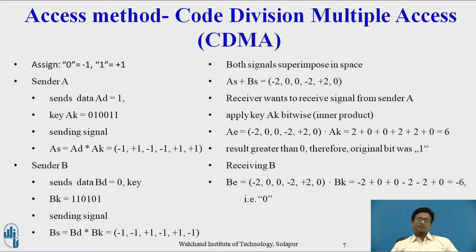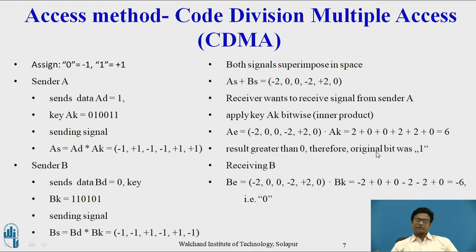Now, if the receiver wants to know the data from sender A, it tunes into A's code by computing C times AK. C is (minus 2, 0, 0, minus 2, plus 2, 0), multiplied with AK (minus 1, plus 1, minus 1, minus 1, plus 1, plus 1), giving: 2, 0, 0, 2, 2, 0. The resulting sum is 6. Since the result is much larger than 0, the receiver detects binary 1 — the original data sent by sender A.